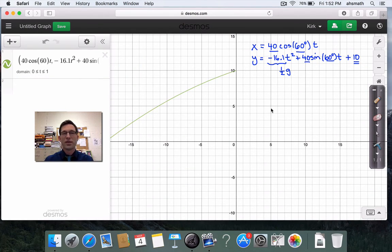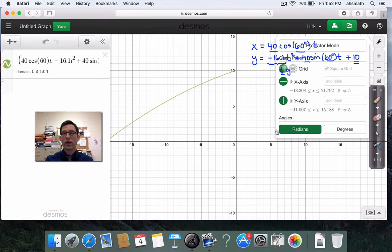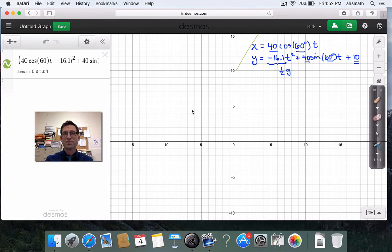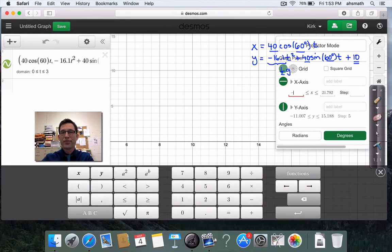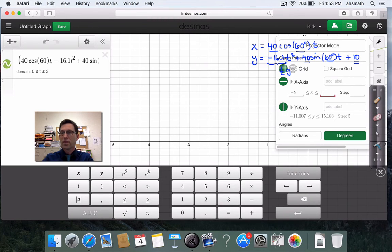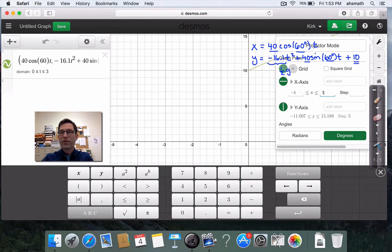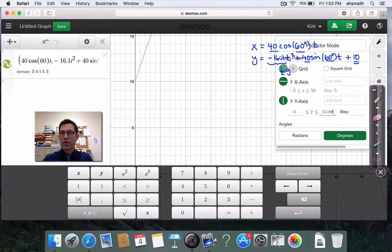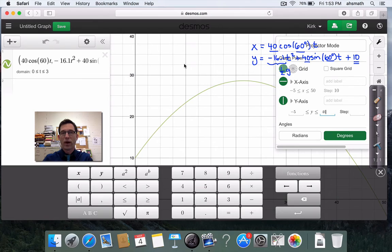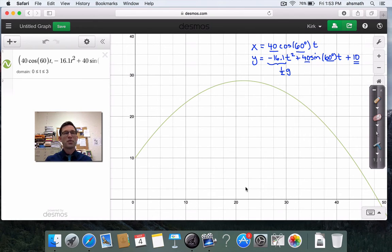We've got 40 times the cosine of 60 times t comma negative 16.1 t squared plus 40 times the sine of 60 t plus 10. Now, one thing that you should be aware of in Desmos is that the default mode is in radians. But I want that to be in degrees. That's easy enough to change, but make sure that you're thinking about this. It's right here. Right now, angles are in radians. Now, they're in degrees. Now, my window is all sorts of off on this. So is my domain. A good domain is 0 to 3. And my window, I've got this one all figured out already, should go from negative 5 in the x direction to what did I want? 50 and from negative 5 to 40 and the y. And there it is. There's my projectile path again.